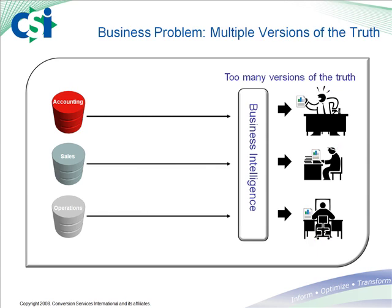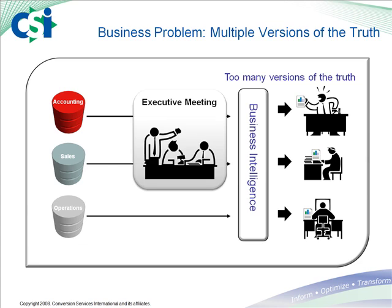For our fourth problem, let's keep with our story that we have a siloed organization when it comes to information access. Well, when executive management meets and brings the reports generated by each of the respective departments, rather than discussing the right thing to do, they end up arguing about which report is right. So that covers our fourth problem: too many versions of the truth.